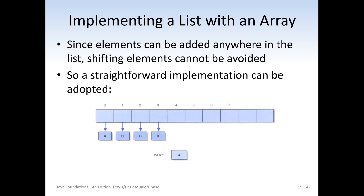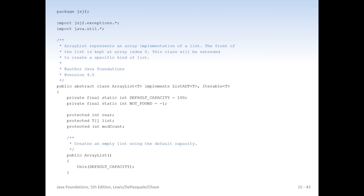If we implement a list with an array, since elements can be added anywhere in the list, shifting things cannot be avoided. We can just have a straightforward implementation putting elements at indices zero, one, two, three, four, and so on. You're going to have to do shifts with an array and searches with a linked list. Unless you're inserting on the front or back, they both end up being order n. With an array, if you insert on the back — the zeroth element — then you have to shift. These things are sometimes not so straightforward with the array implementation.